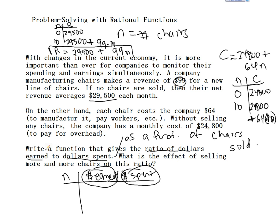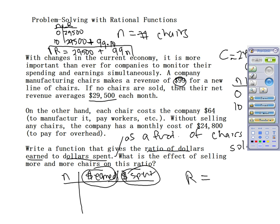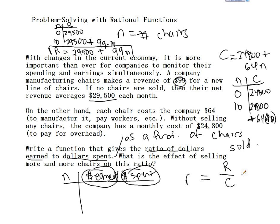Now a function that gives us the ratio of dollars earned to dollars spent — let's call that R for ratio — is equal to dollars earned divided by dollars spent. I'll use lowercase r for revenue so I don't confuse the capital. The ratio function is: revenue function 29,500 plus 99 times N, divided by the cost function 24,800 plus 64 times N. So now I can look at what my revenue is divided by what my cost is, and that gives me a relative measure of the two.